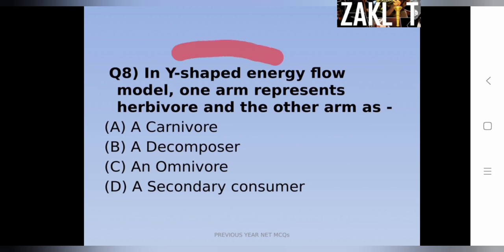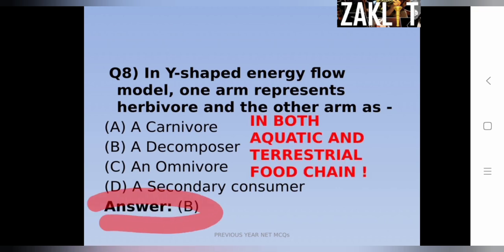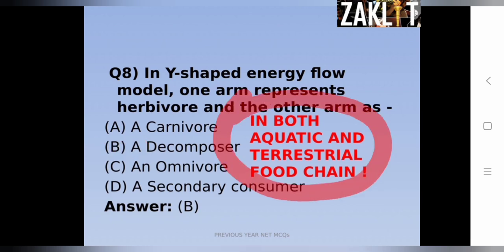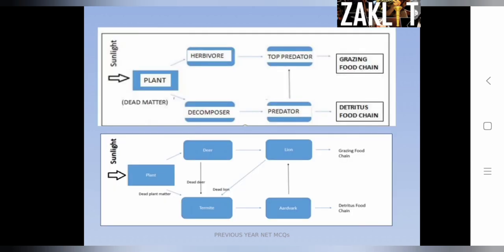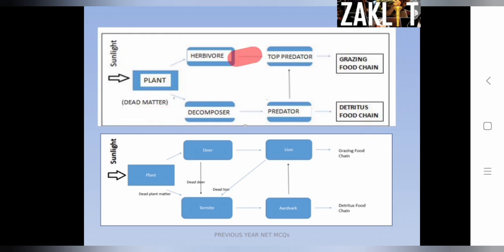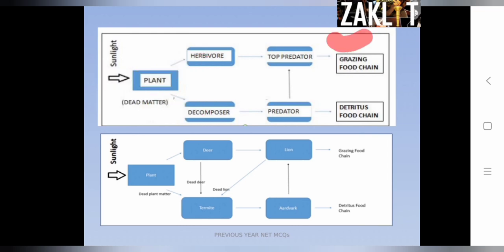The eighth question: in the Y-shaped energy flow model, one arm represents herbivores; what does the other arm represent? The correct answer is option B, decomposer. In both aquatic and terrestrial food chains, the Y-shaped model has two arms originating from one producer. For example, a plant is eaten by herbivores and also by decomposers when dead. The decomposers are then eaten by their predators and herbivores by theirs, giving two separate chains — the grazing food chain and the detritivore food chain.